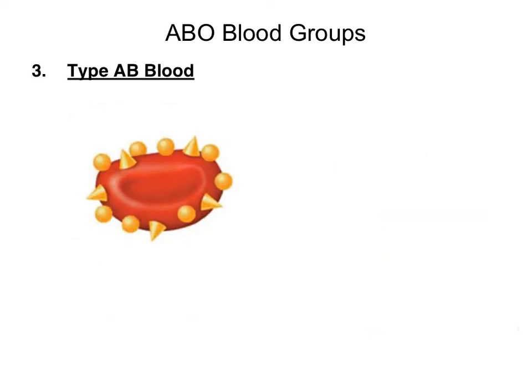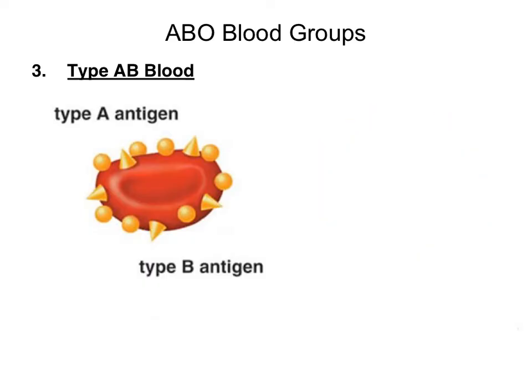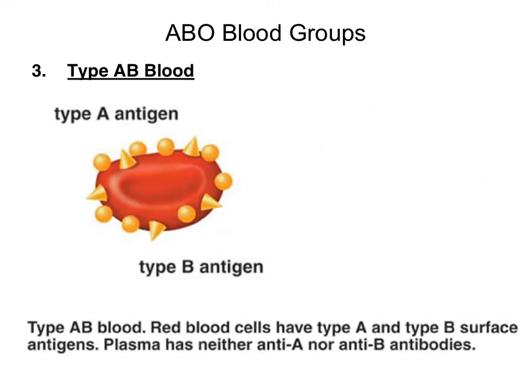The third blood type is type AB blood. A person with type AB blood would have red blood cells that contain both the type A antigen and the type B antigen, while their plasma would contain no anti-A antibodies and no anti-B antibodies. In summary, a person with type AB blood would have red blood cells that have the type A and type B surface antigens, while their plasma has neither the anti-A nor anti-B antibodies.